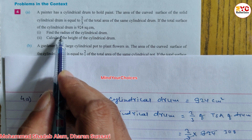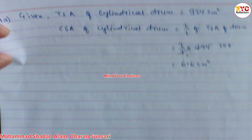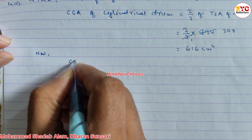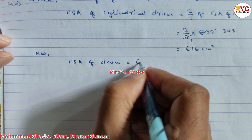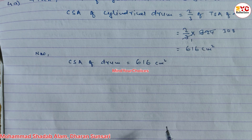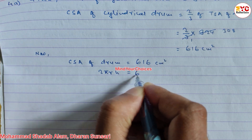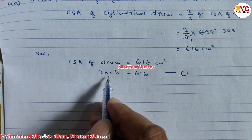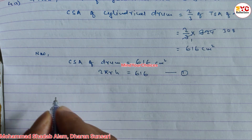Question number 1 is to find the radius of the cylindrical drum, and then we have to find the height. CSA of the drum is 616 cm². Using the CSA formula: 2πrh = 616. This is Equation 1, with unknowns R and H.